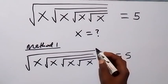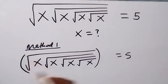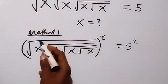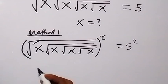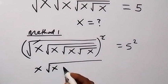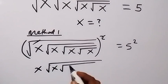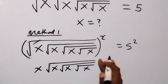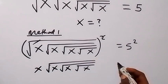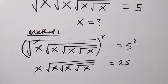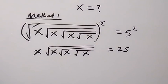In this method, we square this side and also the square on this side. The square cancels the square roots, and we are left with x times root x, then root x, then root x, which equals 5 squared — that is 5 times 5, which is 25.